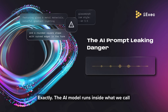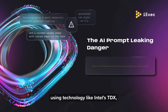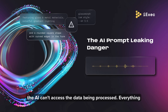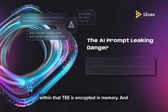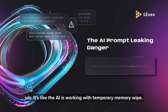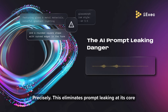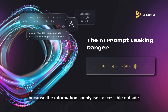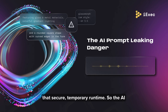So it's like a vault within a vault. The AI model runs inside what we call a trusted execution environment, or TEE. Using technology like Intel's TDX, iExec ensures that even the hardware running the AI can't access the data being processed. Everything within that TEE is encrypted in memory. And most importantly, your prompt never leaves the secure enclave. No logs are kept, no record of it remains after the AI has finished its job. This eliminates prompt leaking at its core because the information simply isn't accessible outside that secure temporary runtime.